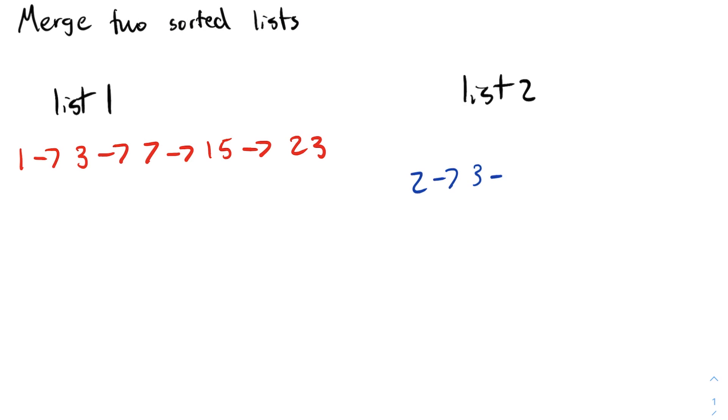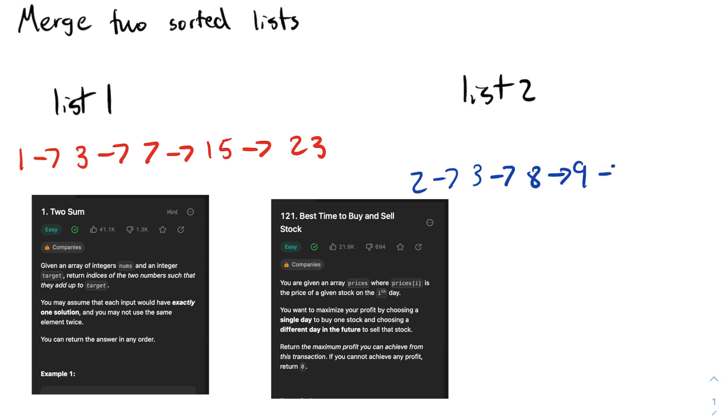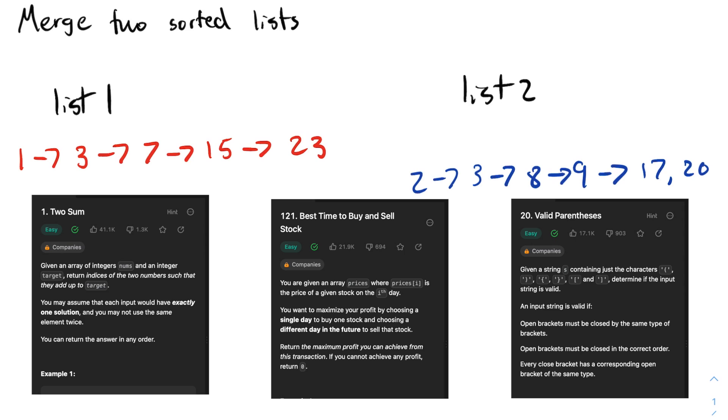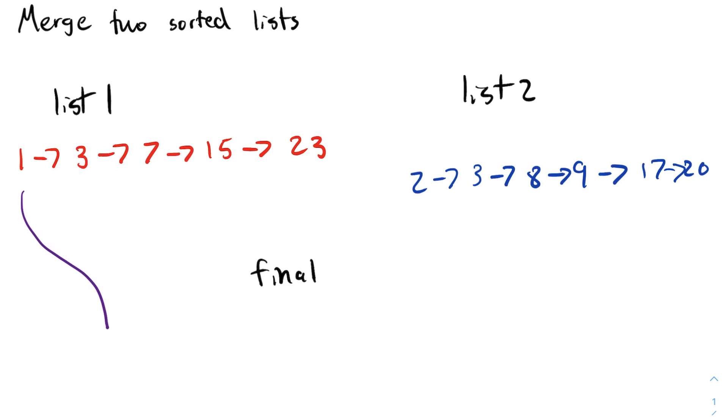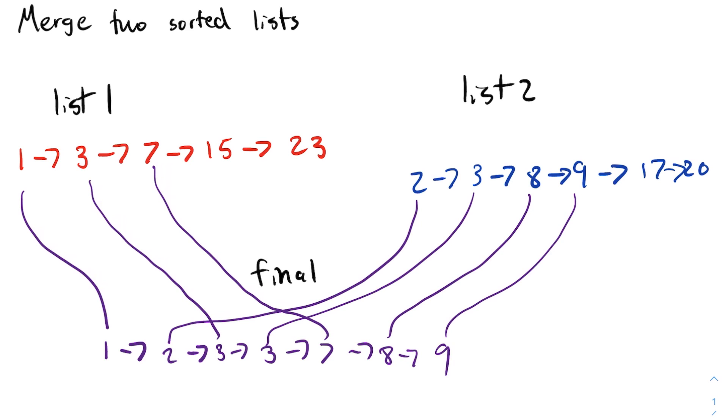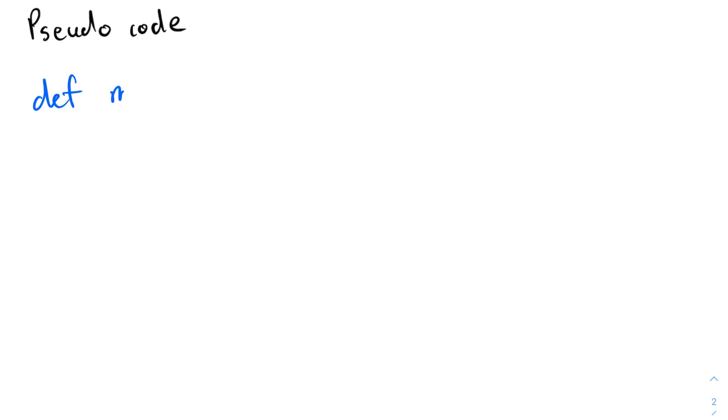The first few questions back were really easy to get into. Two sum, buy and sell stock, and valid parentheses gave me an initial confidence boost that I would have what it took to get back to where I was before. But as I moved from easy problems to medium ones, my confidence took a huge hit. Problems that I'd solved years ago had become incredibly challenging to the point where I couldn't think of a solution even after spending an hour staring at the problem description and its examples.